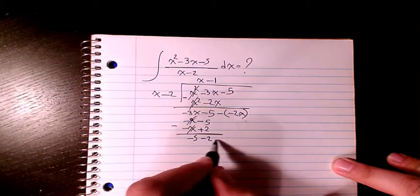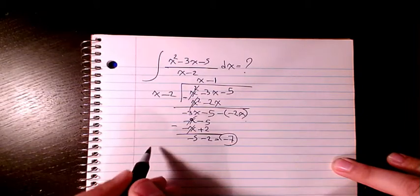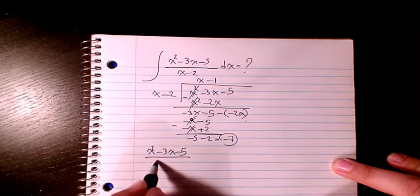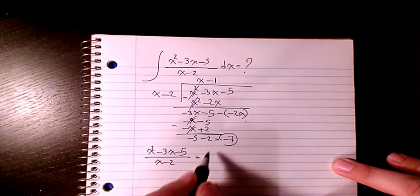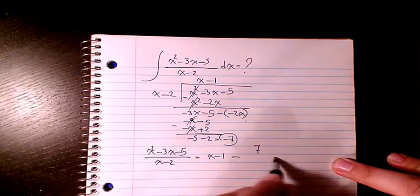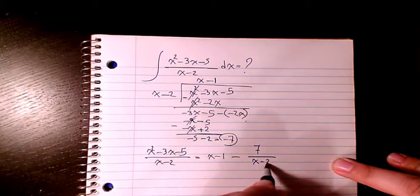These two cancel out. It's going to be negative 5 and negative 2, which is negative 7. So x squared minus 3x minus 5 divided by x minus 2 will be x minus 1 minus 7 over x minus 2.